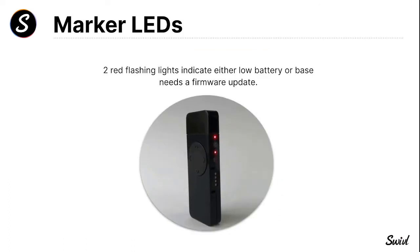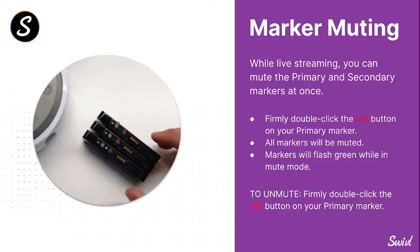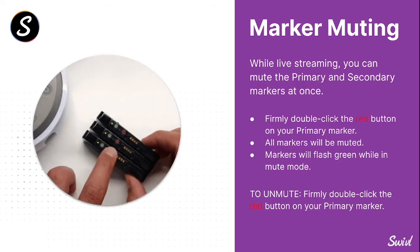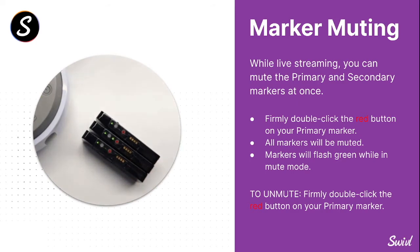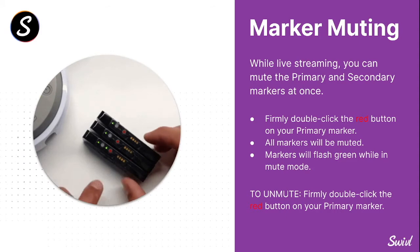Two red flashing lights on the marker indicate a low battery or that it needs a firmware update. To mute while streaming, firmly double-click the red button on your primary marker — this mutes all markers including any secondary markers, and they'll flash green while in mute mode. To unmute, firmly double-click the red button on your primary marker again and it will unmute all devices.